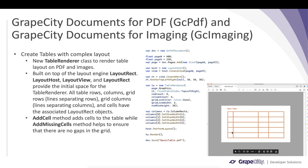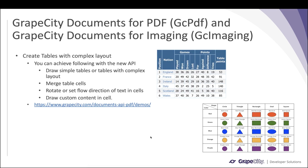Then you define the columns and set the width of each column with respect to each other. Finally, you call the PerformLayout method of the host, render the table, and save the document.